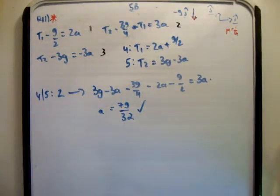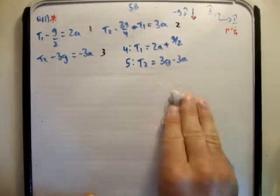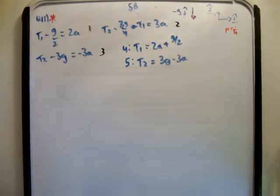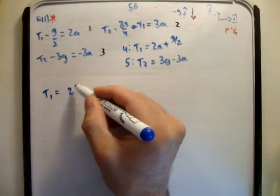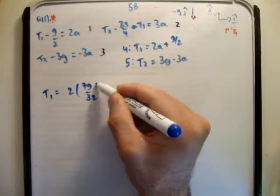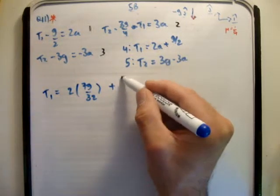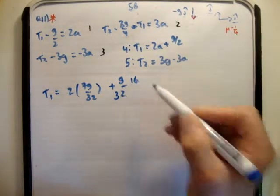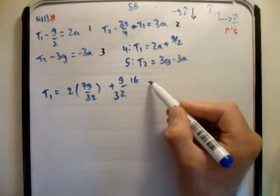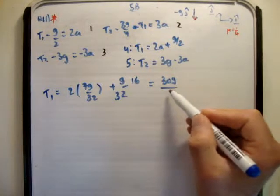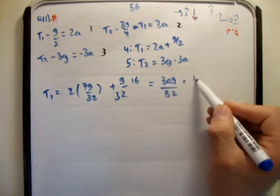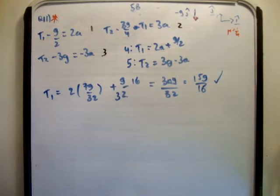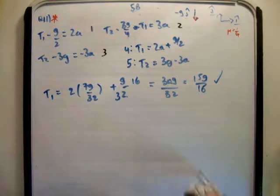So we're doing pretty well so far. The next thing we need to do is get the tensional forces. But we already have t2 and t1 in terms of a and g. So t1 is equal to 2 times 7g over 32 plus g over 2. So if I want this to be 32, I have to multiply across by 16. And if you add that together, you're just going to get 30g over 32, which is equal to 15g over 16, which is correct. That's tensional force number 1.